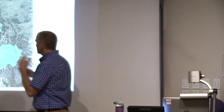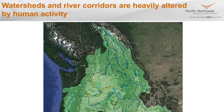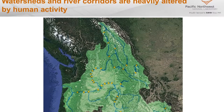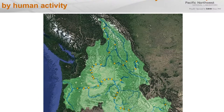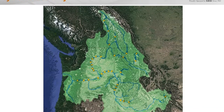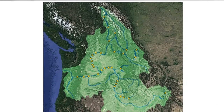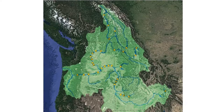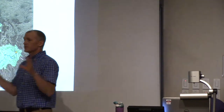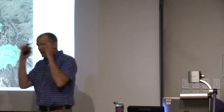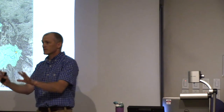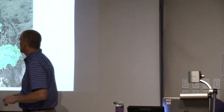Within the watershed, we often think about human alterations and how they impact functioning. This is the Columbia River Basin. The yellow dots are major dams throughout the basin, and those dams really influence how water moves through a watershed. Since we focus on hydrobiogeogeochemistry, the movement of that water is the first-order control of everything else we're interested in.